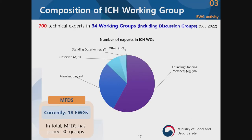For the EWG activity in more detail, as of October there are 34 working groups, and these groups include about 700 experts discussing many different topics. About 58% of the experts in the working groups are from the founding and standing members, and about 29-30% joined after the renovation. The founding and standing members are very active in the working groups.